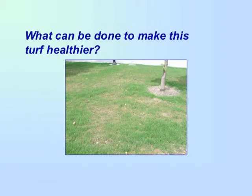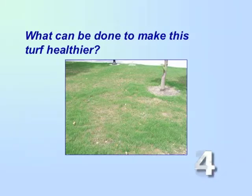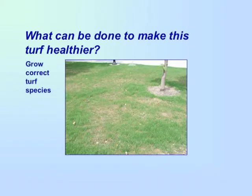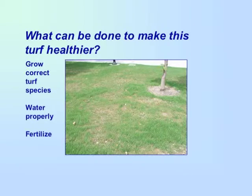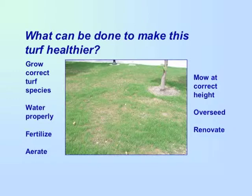What can be done to make this turf healthier? Make sure you are growing the correct turf species for your area. Water and fertilize properly. Aerate as needed. And keep your lawn mowed at the correct height. Overseed lawns that are thin or dormant, and consider renovating very weedy lawns or lawns with weedy patches. Herbicide should only be used as a last resort. Also avoid fertilizer products containing herbicides.